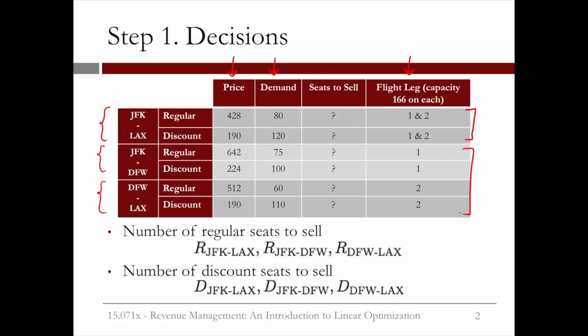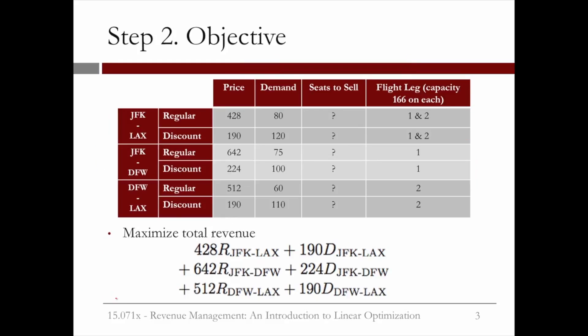So what are our decisions now? They're the number of regular tickets to sell for each type, and the number of discount tickets to sell for each type. So in total, we have six decisions to make. Our objective, like before, is to maximize the total revenue. This is the sum of the price of the ticket times the number of seats of that type we sell, for each type of ticket.